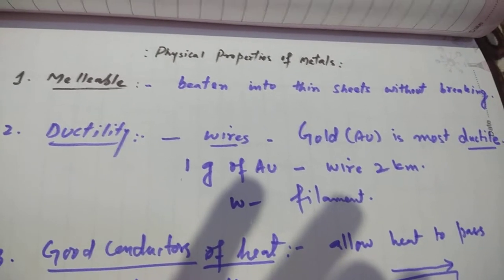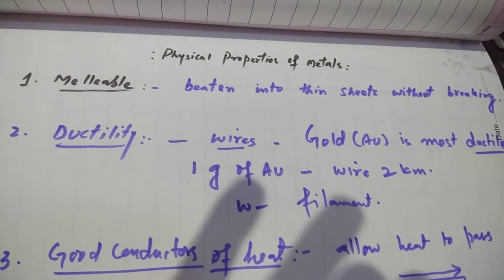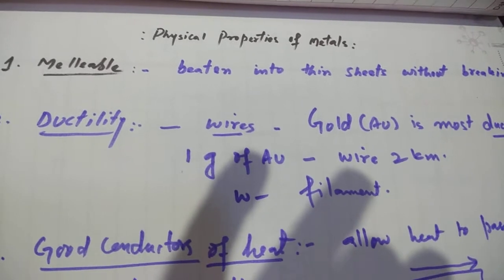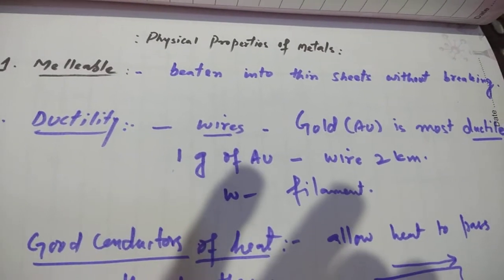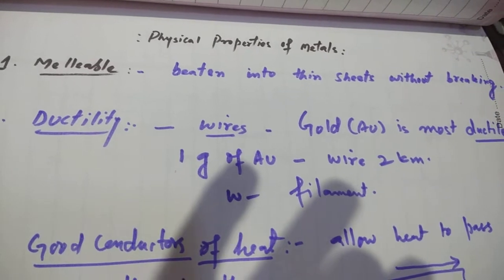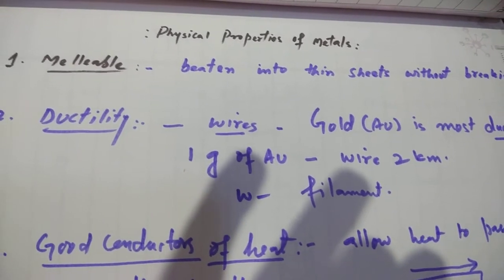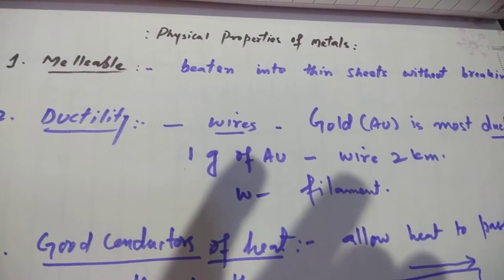There are some metals like silver, copper, aluminum - they are highly malleable. So when you see the utensils which we use in our day-to-day life, copper is made due to the property that is malleability.